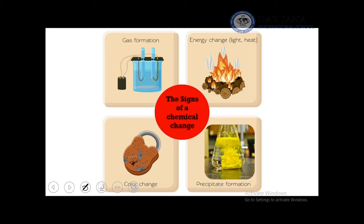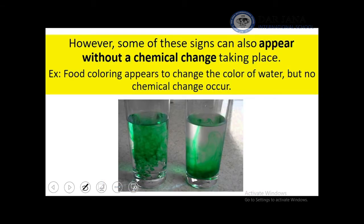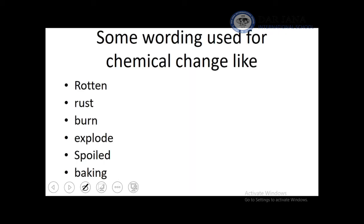A change in color alone doesn't always mean a chemical change — we might have a color change that is only a physical change. Common words associated with chemical changes include: rotten, rust, burn, explode, spoiled, and baking. All of these indicate a chemical change.